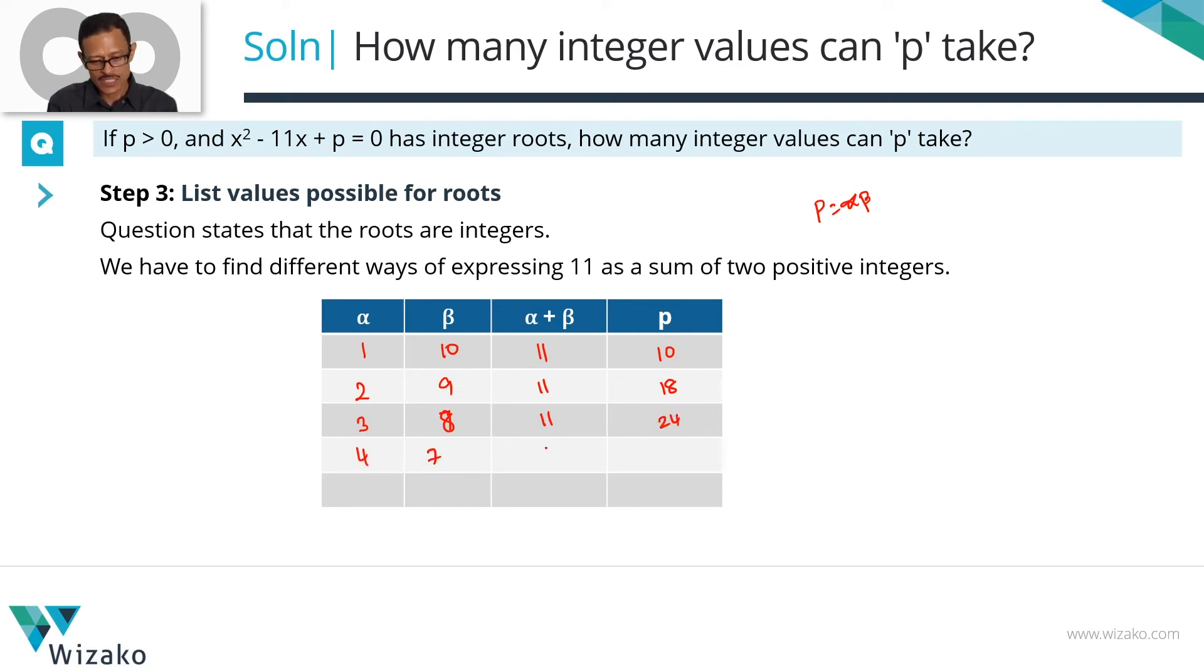Next one is 4 and 7. Sum is 11, product is equal to 28. 5 and 6 is the fifth possibility. Sum continues to be 11 and the product is equal to 30.